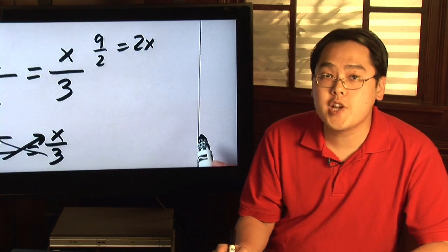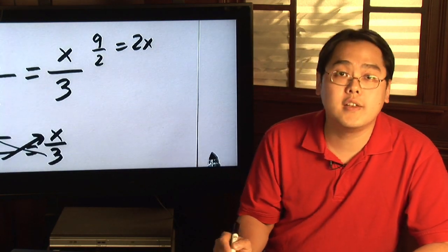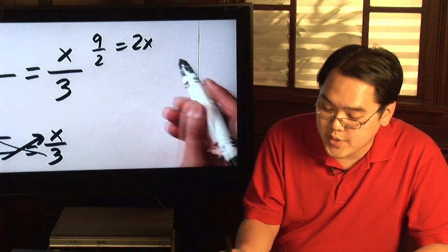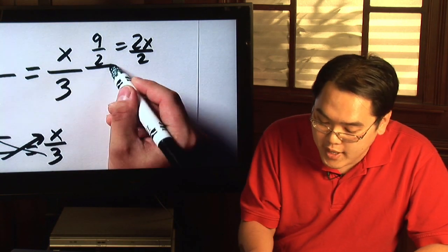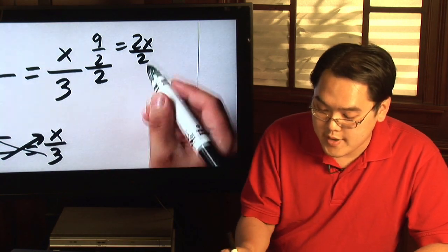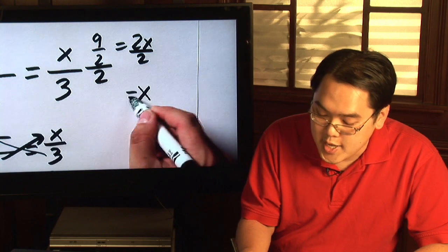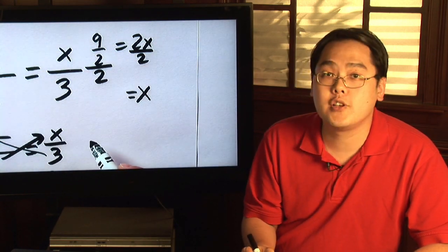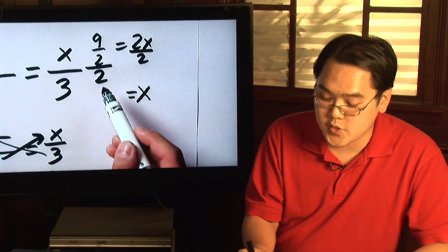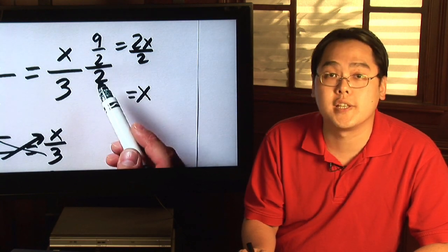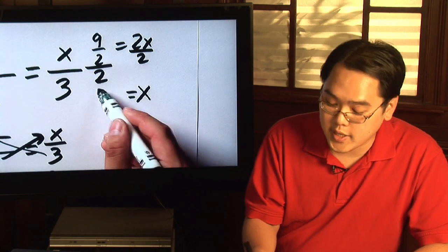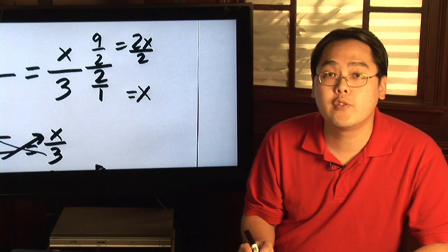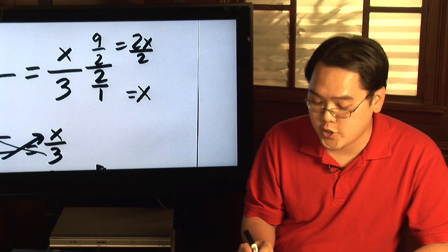Now your objective is to solve for x, and because the two is multiplied with the x, just divide both sides by two. Now you have x on one side, but you need to figure out nine halves divided by two. Since you're dividing by a whole number and you have a fraction on top, give this a fraction as well — so you have nine over two divided by two over one.